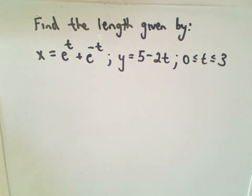So I'm going to find the length given by the parametric curves x equals e to the t plus e to the negative t, y is 5 minus 2t, and t is going to be on the interval 0 to 3.